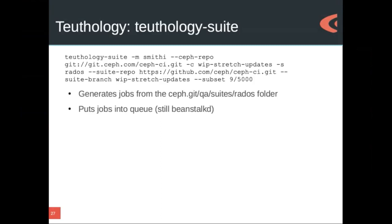Here's a command I ran recently from my shell history to find an example. When you run teuthology-suite, you specify a particular suite to run — this dash-us radio says run the Rados suite. I'm running it on a particular set of machines, the Smithy ones in this case, and I am drawing a particular package. This is a branch called whip-stretch-updates which is in the cephci.git repository. I want to use the version of the suite located at the same place, and I don't want to run all the suites. This particular command goes off and generates the set of jobs in the Rados suite and puts those jobs into the Beanstalk queue, and eventually they get executed.